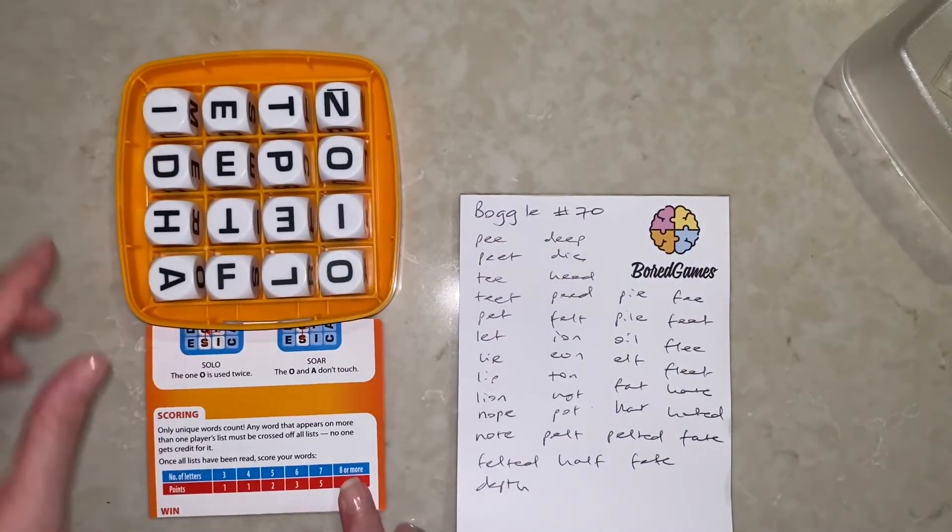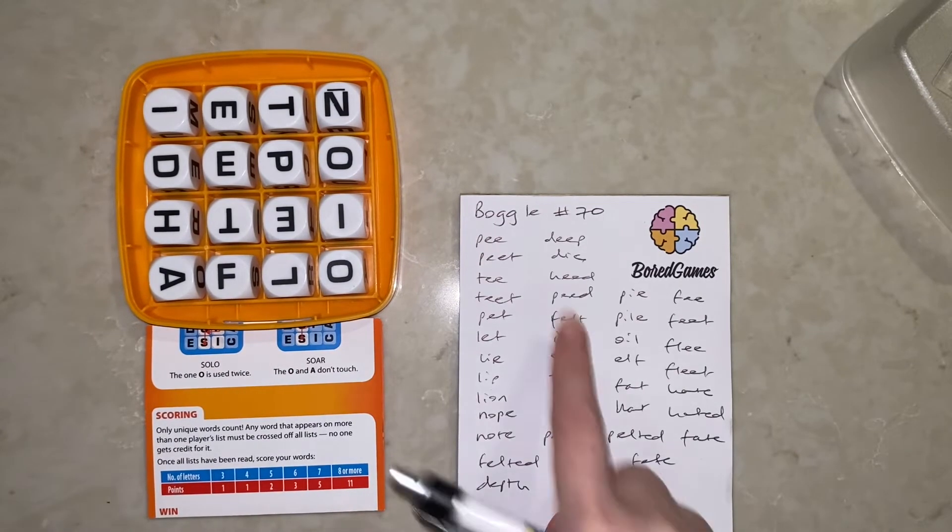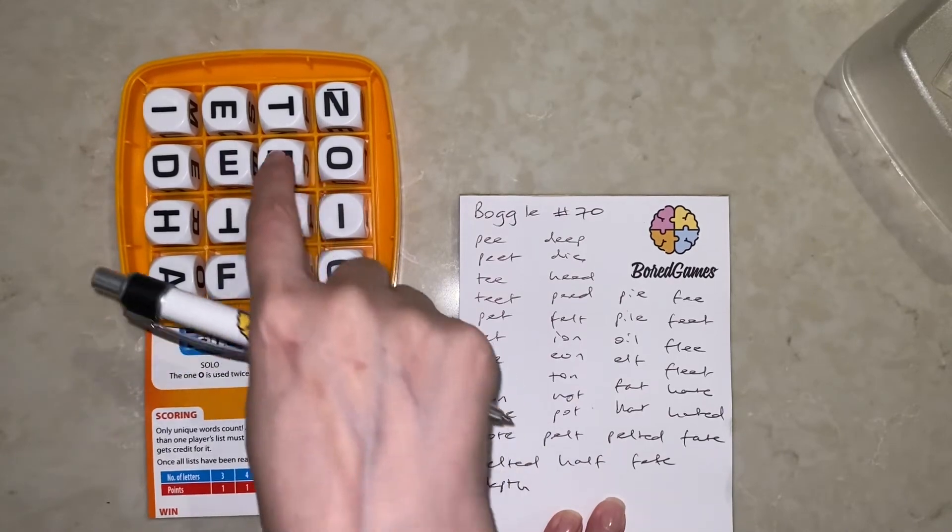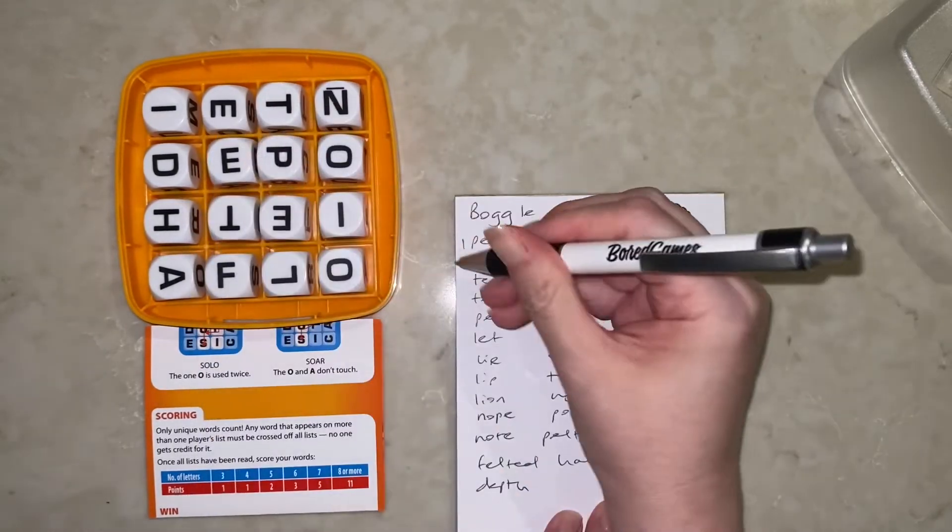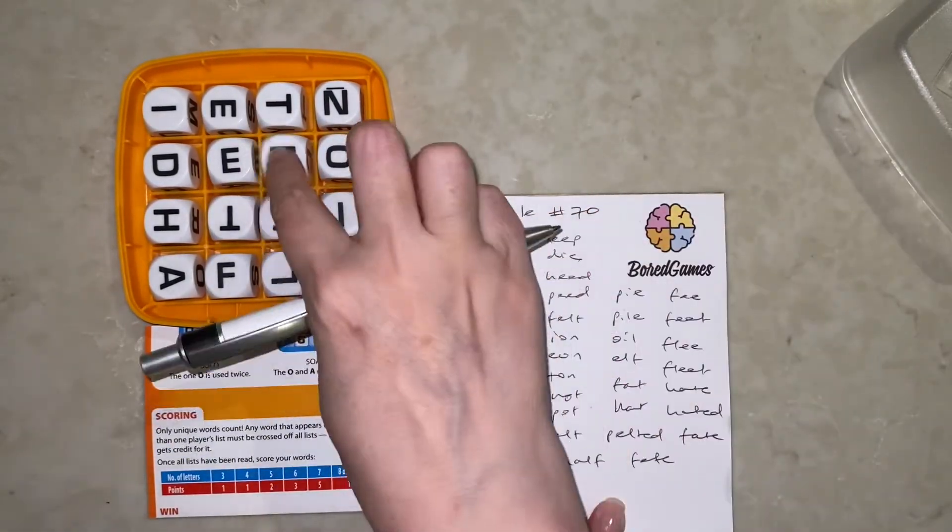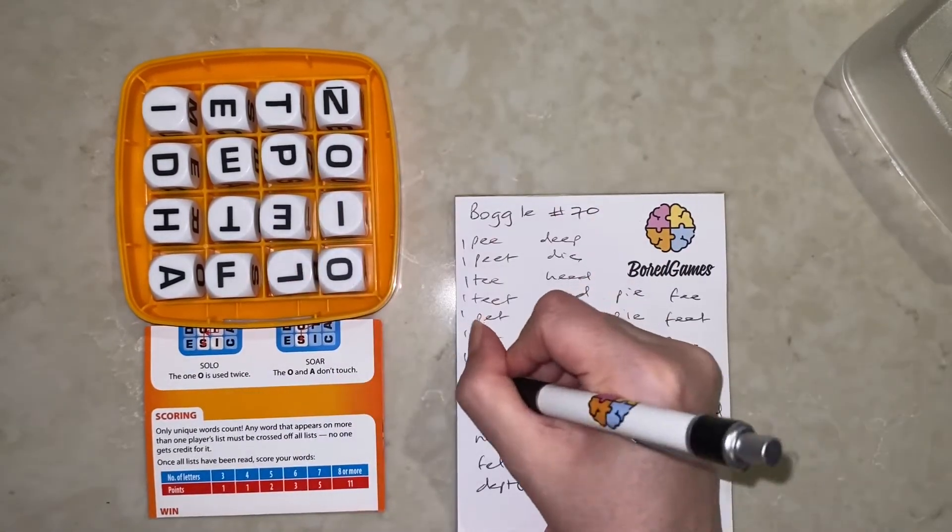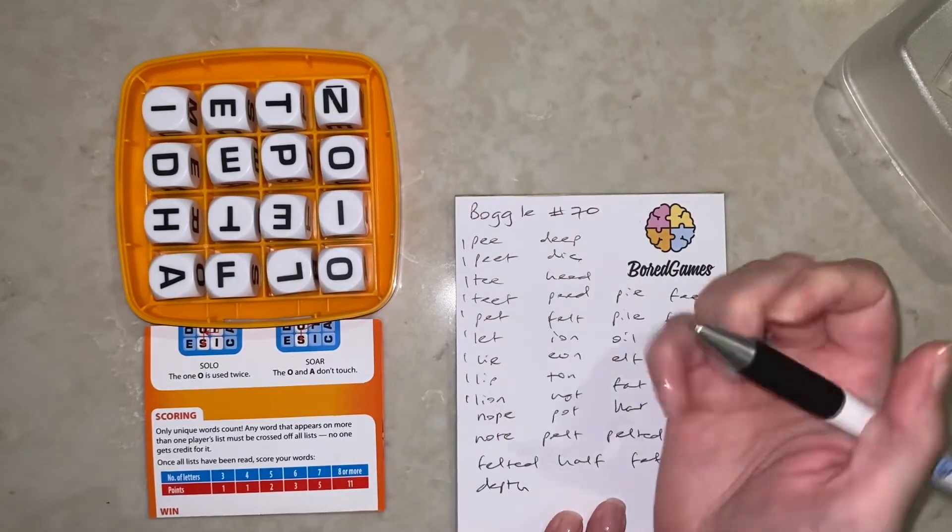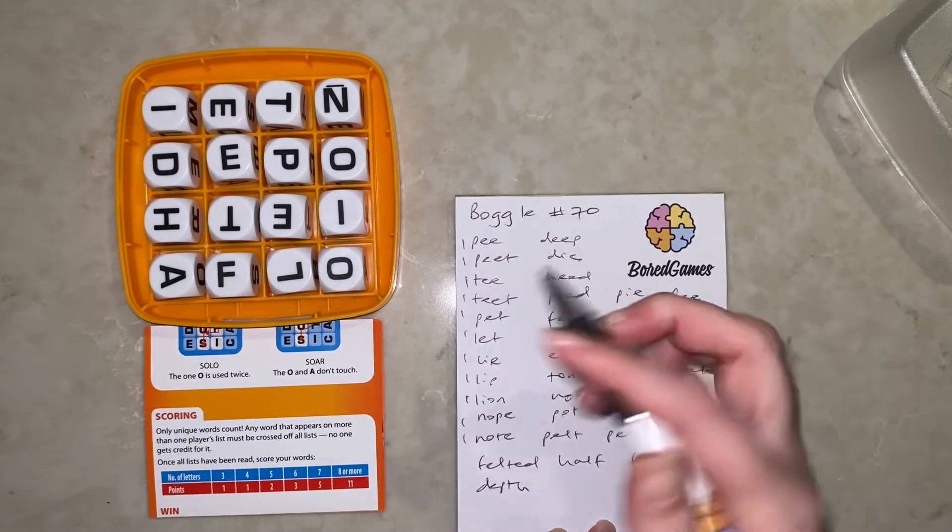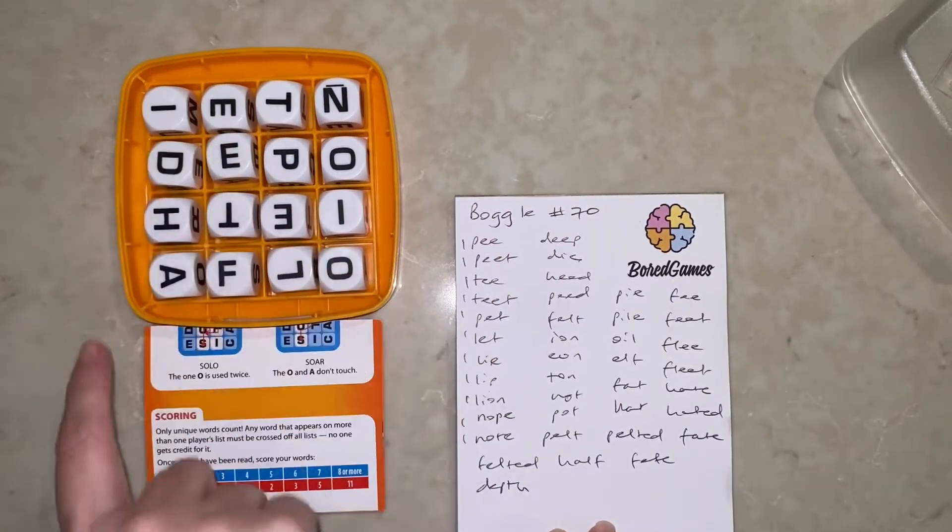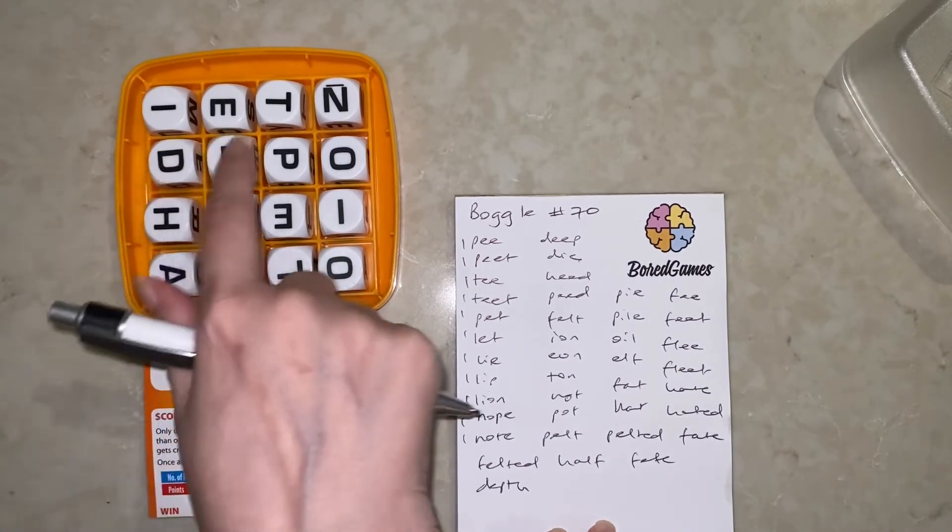Okay, we've got our little scoring table here, so no oversupply of points on those four letters. All right, my first words were P and Pete, T and teat, Pet and let, Lie and lip, Lion, Nope and note. Felted and depth, F-E-L-T-E-D, D-E-P-T-H. There we go. So felted is six, so that's three, and depth is five, so that's two.